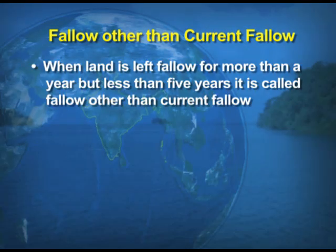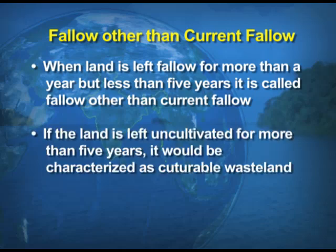The next category is fallow other than current fallow. When the land is left fallow for more than a year but less than five years, it is called fallow other than current fallow. If the land is left uncultivated for more than five years, it would be characterized as culturable wasteland, meaning we consider that land not fit for cultivation.